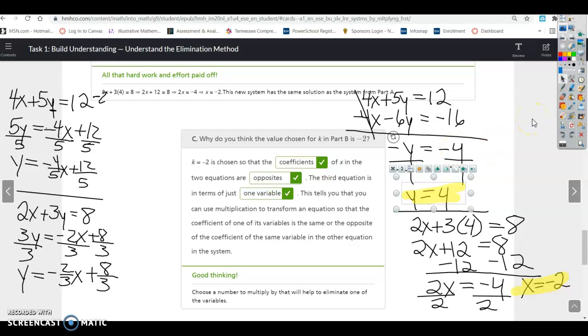So that's just explaining why they chose k and why you would add instead of subtract in this case. Because remember, you can add or subtract. The fact that we added or multiplied by negative 2, that was so that we could add these two equations together to use elimination. That's all for task 1. If you have questions, please let me know.